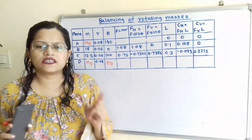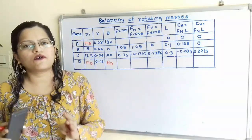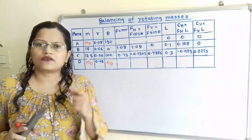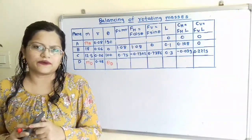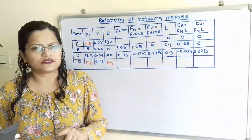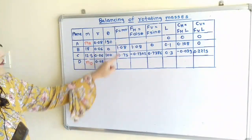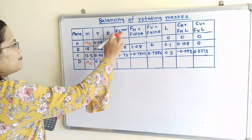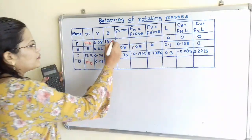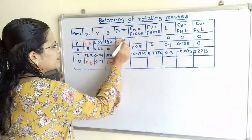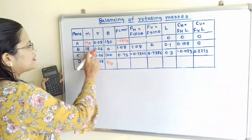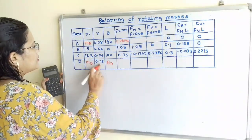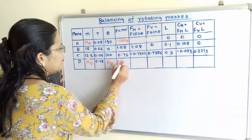We find the centrifugal force, which equals MR·ω². Since all masses rotate with the same angular velocity, ω remains constant, so we consider F = MR. For plane A: 0.08·MA (unknown). For B: 18 × 0.06 = 1.08. For C: 12.5 × 0.06 = 0.75. For D: 0.08·MD (unknown).